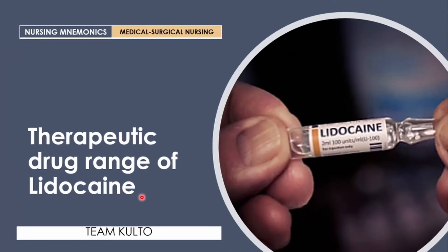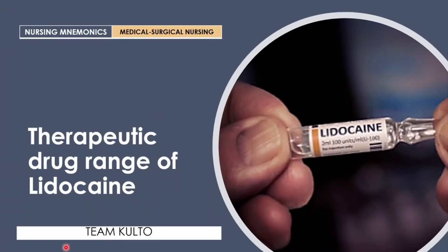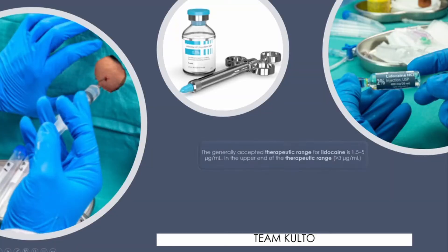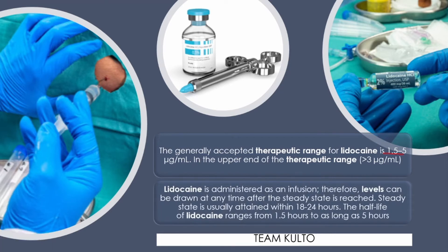Now let's look at the therapeutic drug range of lidocaine — how do we know when it becomes toxic in our patient? The generally accepted therapeutic range for lidocaine is 1.5 to 5 micrograms per milliliter. At the upper end of the therapeutic range, meaning more than 3 micrograms per milliliter, you can prompt the doctor for possible lidocaine toxicity. Lidocaine is administered as an infusion, so levels can be drawn at any time after steady state is reached. Steady state is usually attained within 18 to 24 hours. The half-life of lidocaine ranges from 1.5 hours to as long as 5 hours.